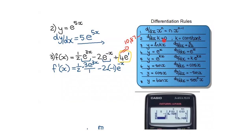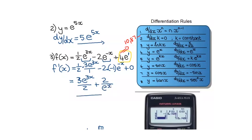Now I simplify what I have. I've got 3e to the power 3x divided by 2. Negative times negative is positive: 2 times e to the power negative x. But remember, they don't want negative exponents. So I use the rule that says the moment I shift the base e downwards with its exponent, the exponent becomes positive. And I don't have to write the plus 0.